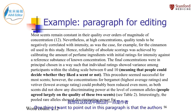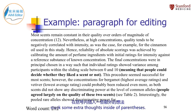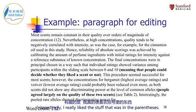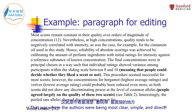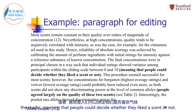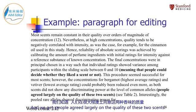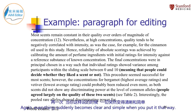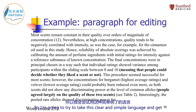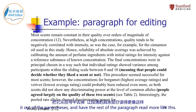One thing I want to point out in this paragraph is that the authors stuck some extra thoughts inside of parentheses. Interestingly, I really liked the stuff that was in the parentheses. That was where the authors were being most clear, simple, and direct. They clarify for the reader, meaning that people could decide whether they liked a scent or not — as soon as they say it so blatantly, now I get it. And we get: people agreed largely on the quality of these two scents. Everything suddenly becomes clear and simple when you put it that way. So I'm going to try to take this clear and simple language and get it out of the parentheses and have the rest of the paragraph read more like this.